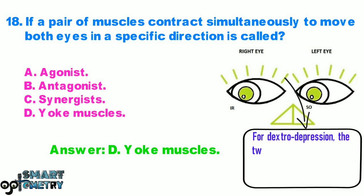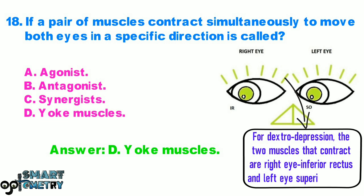For dextrodepression, the two muscles that contract are the right eye inferior rectus and left eye superior oblique.